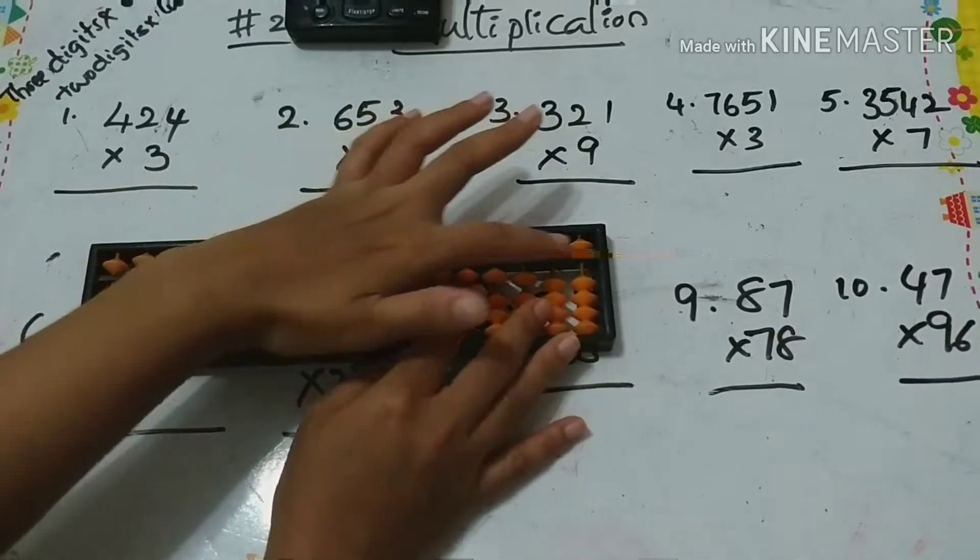I have to multiply 65 times 28. First 6 times 28, then 5 times 28. Six twos are 12, then six eights are 48. Next I have five twos are 10, plus 10. Then I have to add 40. The answer is 1820.